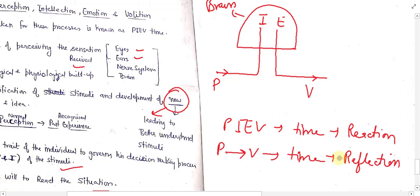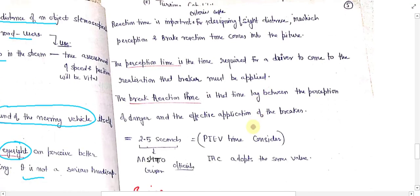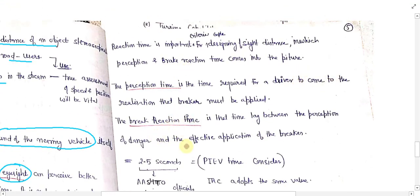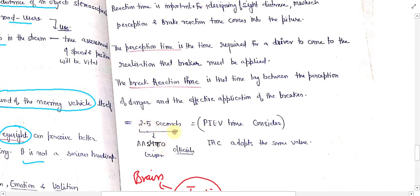As you practice more — like a sportsman reducing their reflex time — perfection is gained. But for a normal human being, we design our facilities on the basis of reaction time. Reaction time is used for stopping sight distance, and according to AASHO, 2.5 seconds is taken as the reaction time. This value has also been adopted by the Indian Roads Congress.